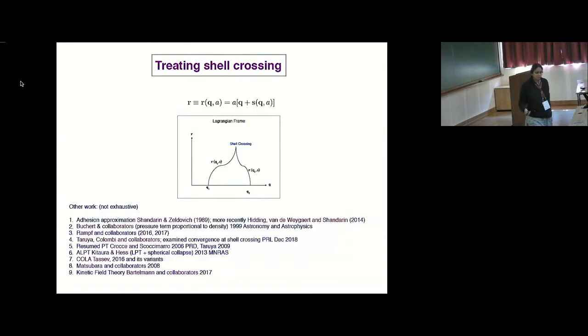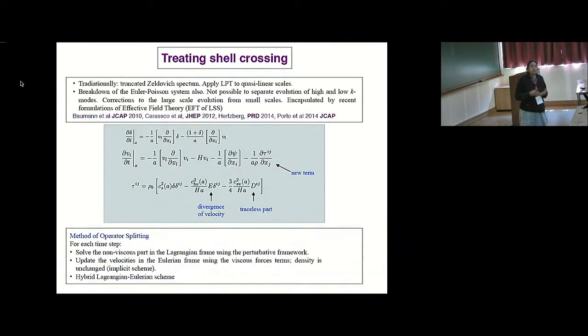So that's the thing I'm—this is now still work in preparation, but we have started to address this issue. And this is an issue that has been looked at by many more people. I have just listed a few of them here. So the main point is that once you have shell crossing, the Euler-Poisson system also breaks down. It's not just that the system breaks down in the Lagrangian frame because of this volume transformation, but actually the Euler-Poisson system is not valid in the multi-streaming regime. And so the small scale crossings, the small scale physics actually comes back and affects your large scale physics. And so you can't just say that let me get rid of the small scales and just apply LPT to large scales, because in the shell crossing regime, the equations are wrong.